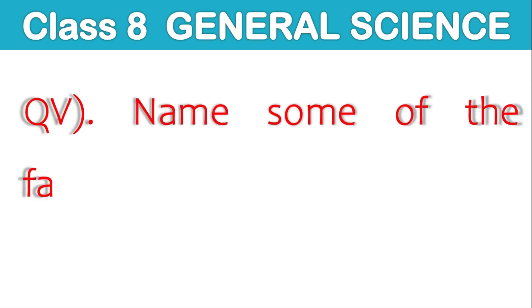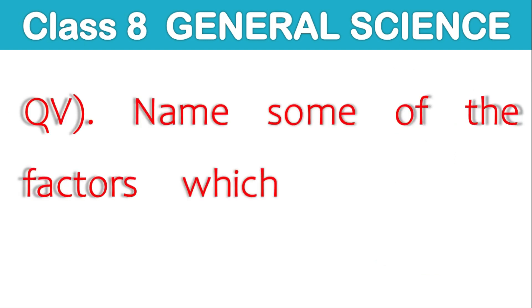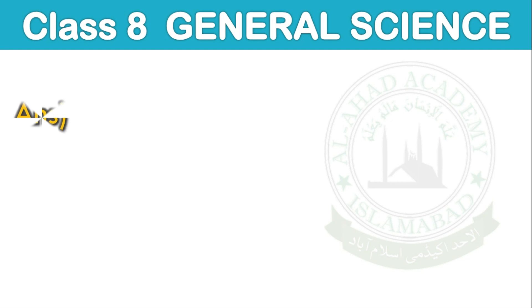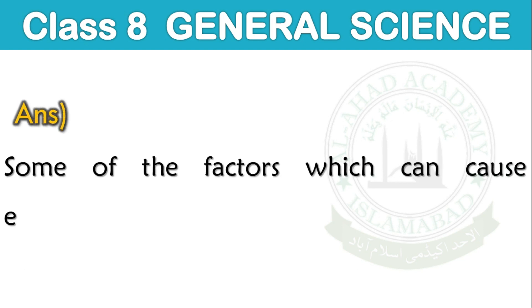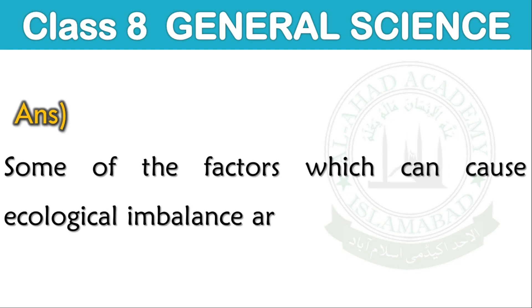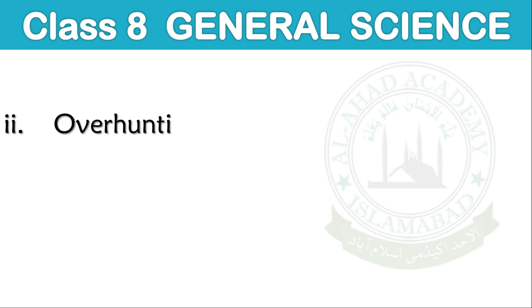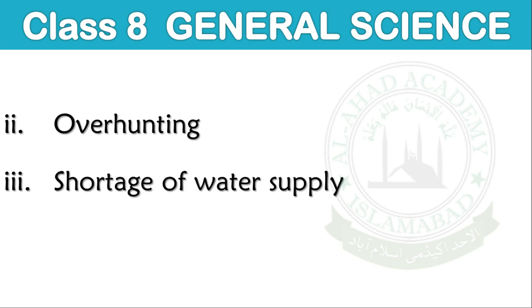Question number 5: Name some of the factors which can cause ecological imbalance. Answer: Introduction of a new species, overhunting, shortage of water supply, and migration.